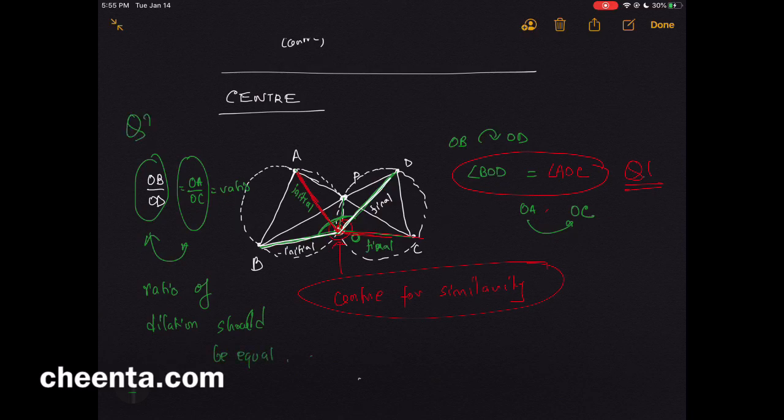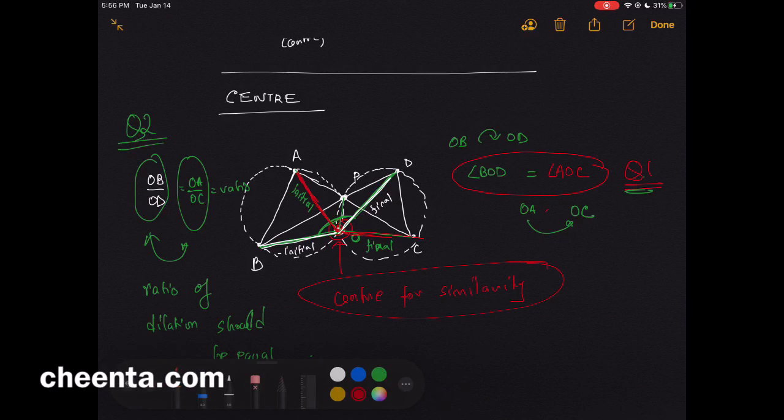These should be equal. This is question number two. Question number one is: are the angles equal? Question number two: are the ratios equal? If both of them are equal, then this point O has our desired property.